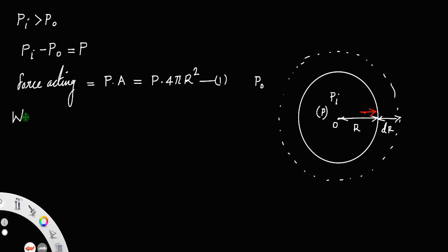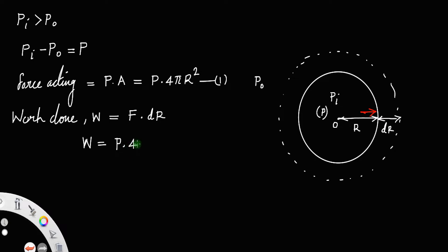The work done by this force W is equal to force times displacement. The displacement here is dr. So the work done will be W = P × 4πr² × dr. Let us call that equation number two. This is the work done by the excess pressure.